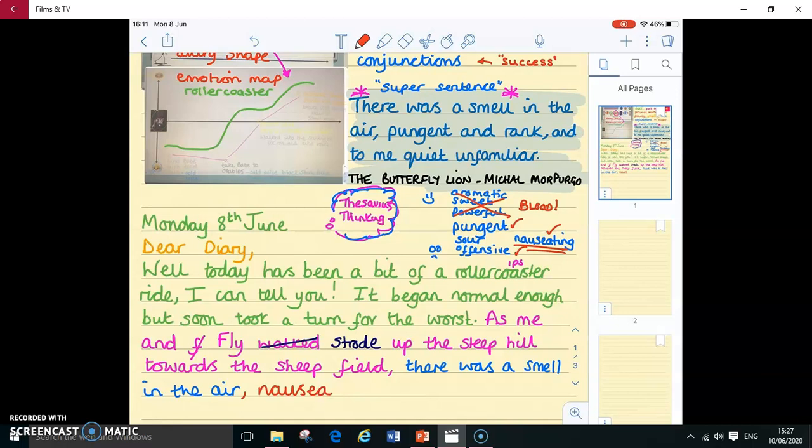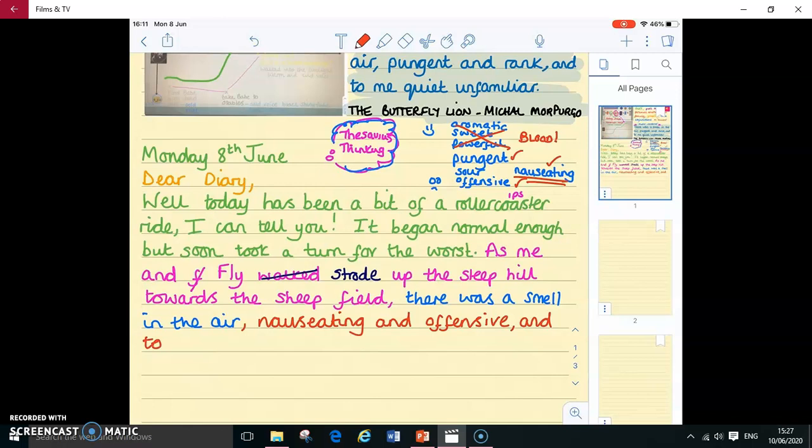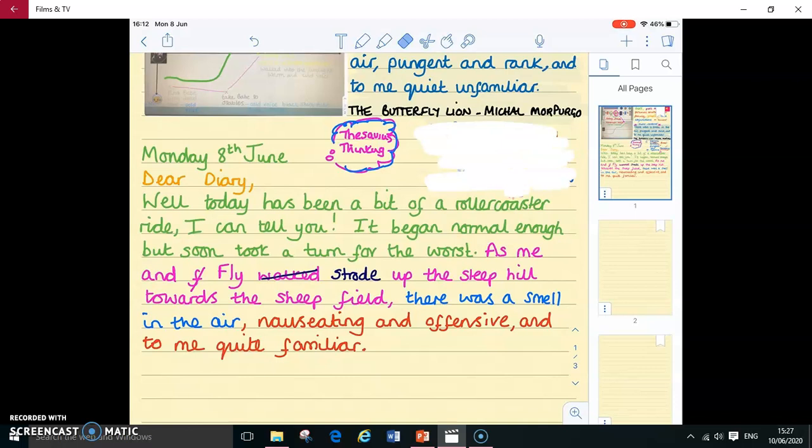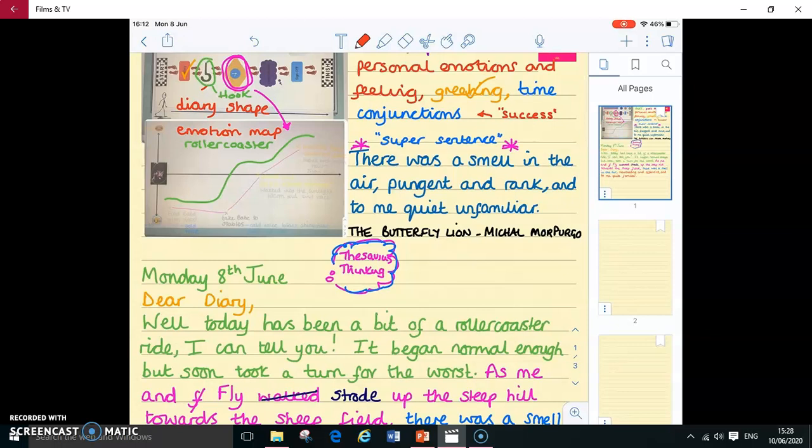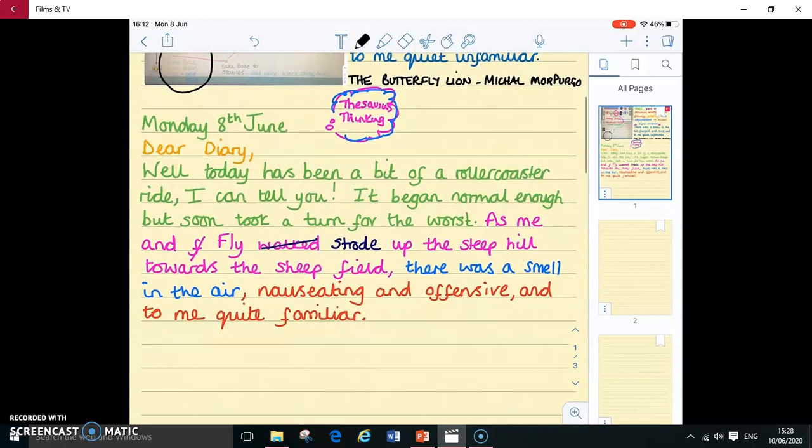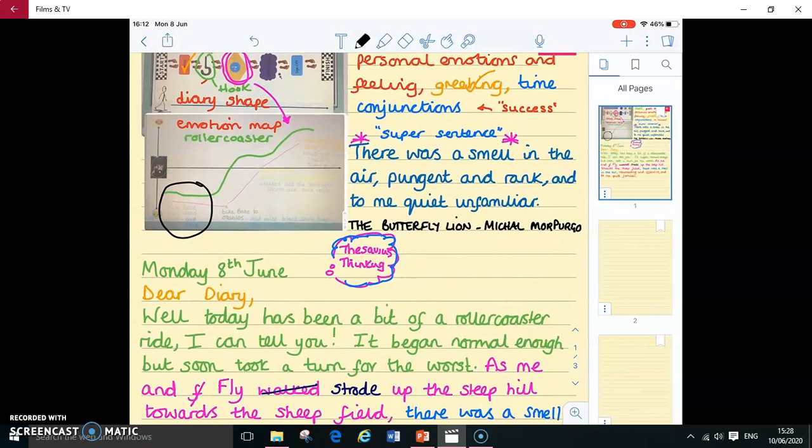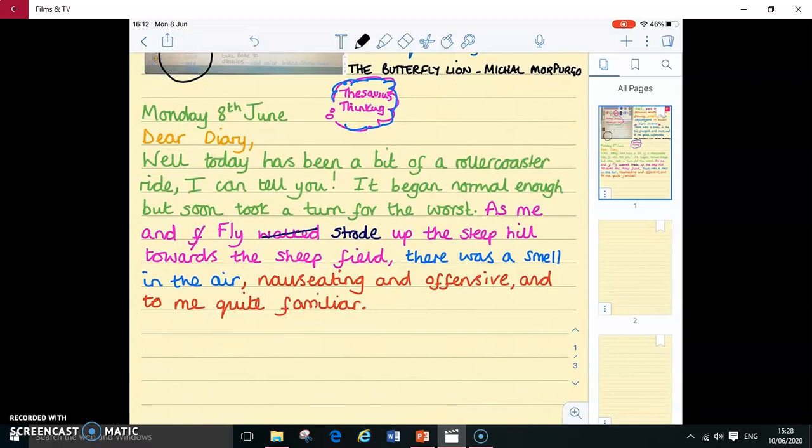As me and fly strode up the steep hill towards the sheep field, there was a smell in the air, nauseating and offensive. And to me, I'm going to change unfamiliar to familiar. Because as a farmer, Farmer Hoggett would probably have smelt animal blood before. So he is familiar with it. Nauseating and offensive. And to me, quite familiar. So let me get rid of my thesaurus thinking here. So we've got a bit more room. Might need that space again a little bit further on. So I've gone up the field. I've got this smell coming towards me. So I've used a smell sentence. I've looked through the lens of smell so far. I'm still on this first part of my emotions graph though. And I'm adding more detail. I'm deepening the moment. Giving you more information.